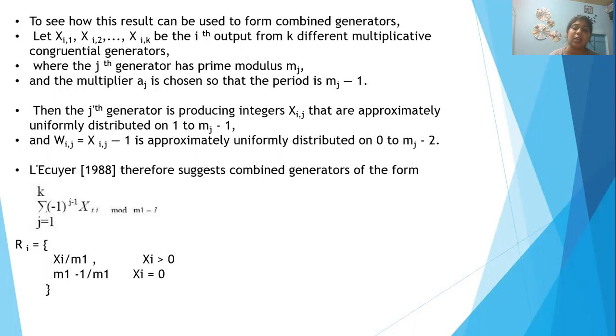We find the value R_i, which is, when X_i is greater than 0, we compute X_i divided by m_1, and when X_i equals 0, we compute m_1 minus 1 divided by m_1.